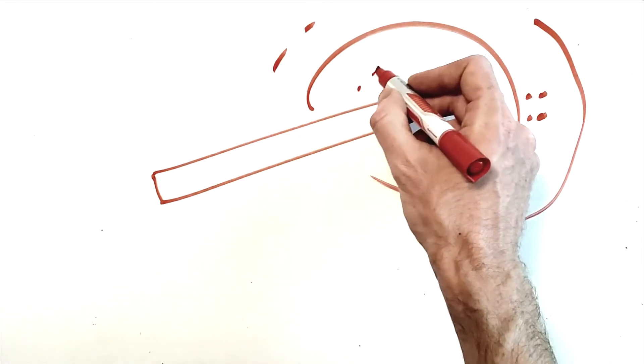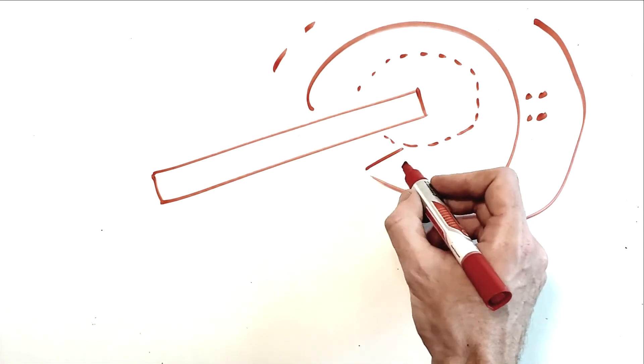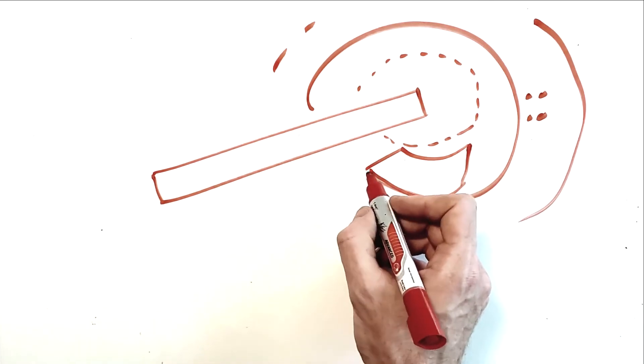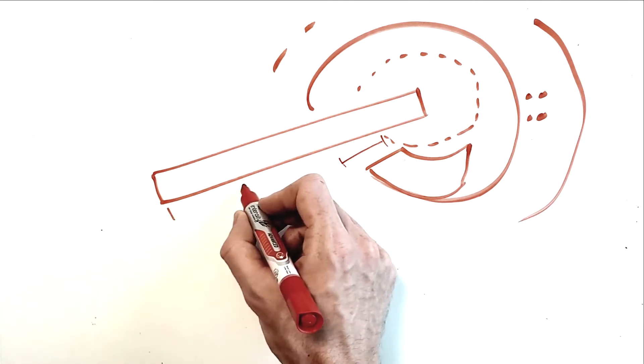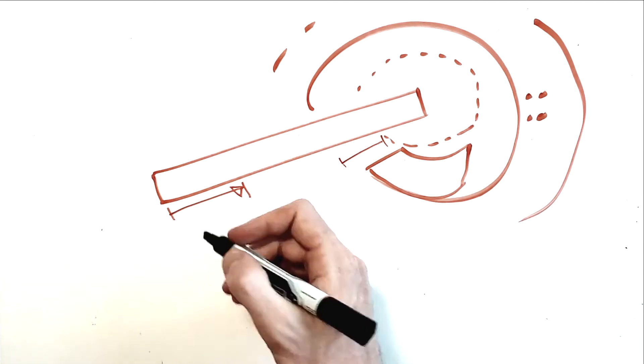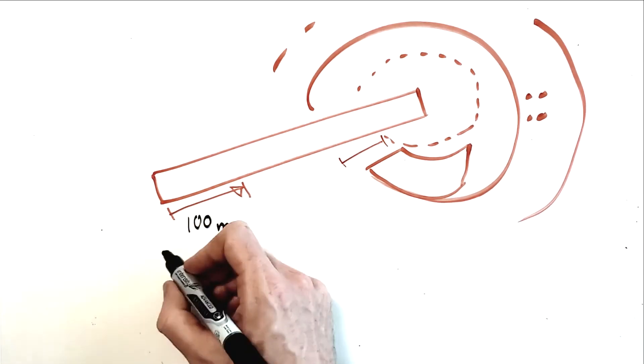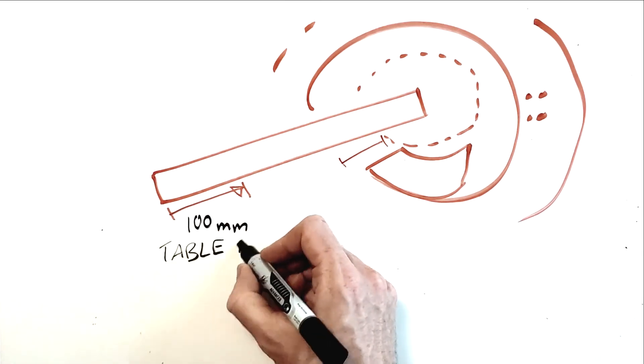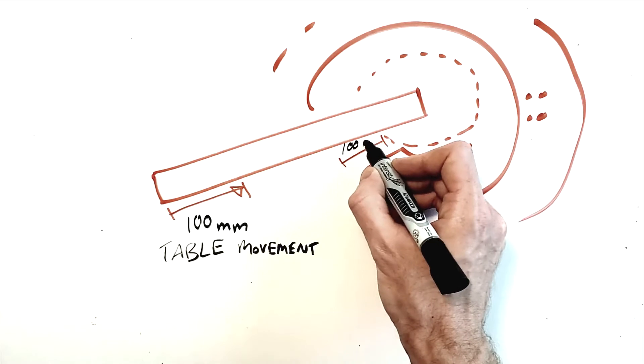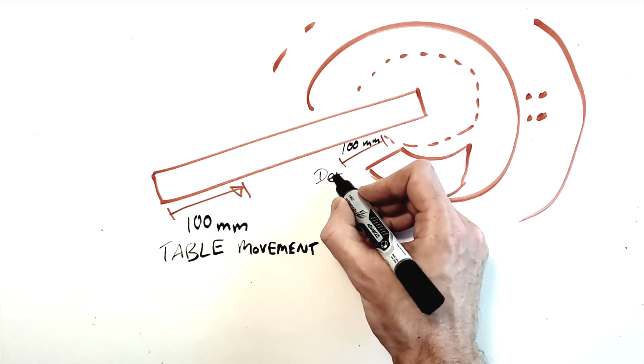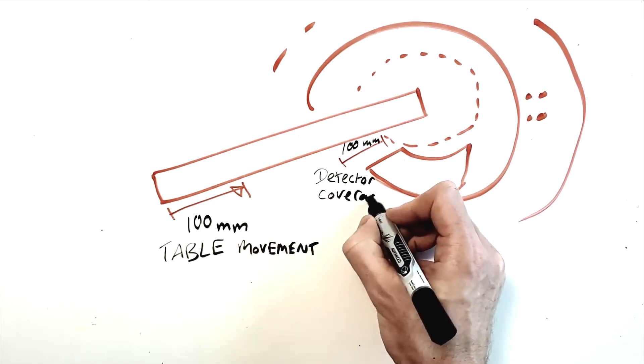Perhaps the most obvious way for this to happen would be for the table to move at a rate consistent with the data acquisition. That is, if your detector array covers 100mm, the table moving at 100mm for each rotation, then you would have a 1-to-1 ratio of data acquisition length in the z-axis to table movement length in the z-axis. This is the scenario when using a pitch factor of 1.